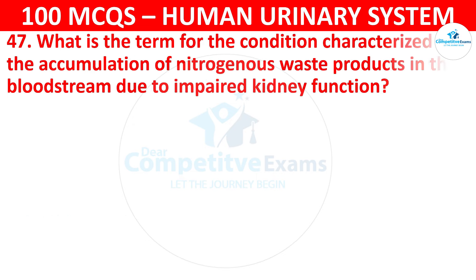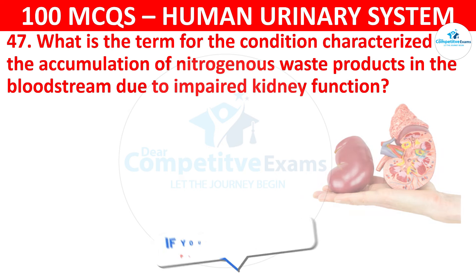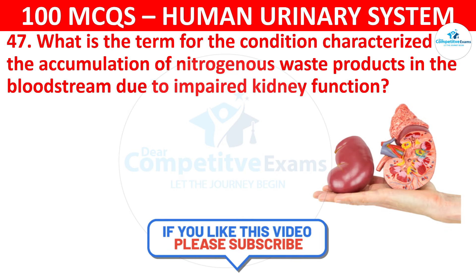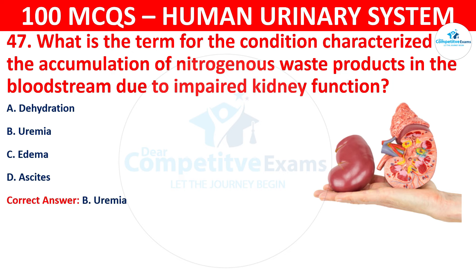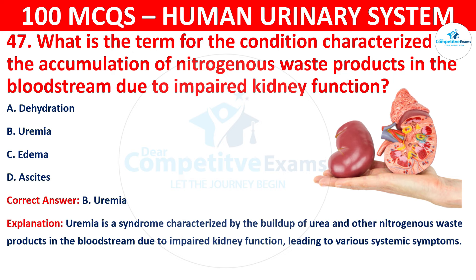Question 47: What is the term for the condition characterized by the accumulation of nitrogenous waste products in the bloodstream due to impaired kidney function? The options are: dehydration, uremia, edema, or ascites. The correct answer is B, that is uremia. Uremia is a syndrome characterized by the buildup of urea and other nitrogenous waste products in the bloodstream due to impaired kidney function, leading to various systemic symptoms.